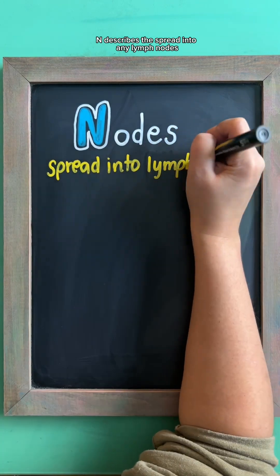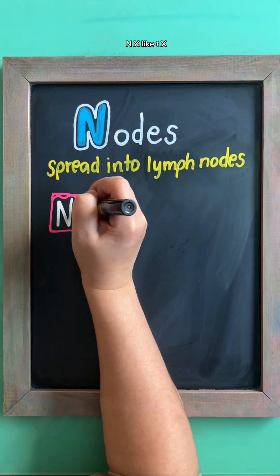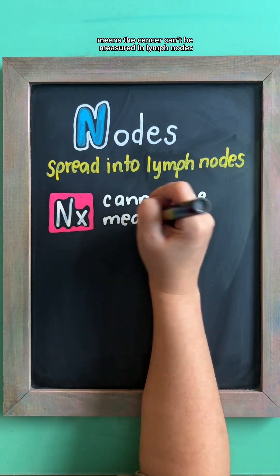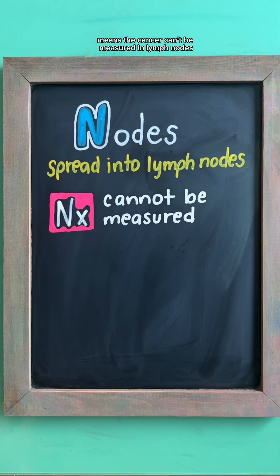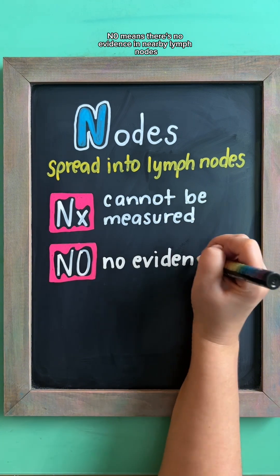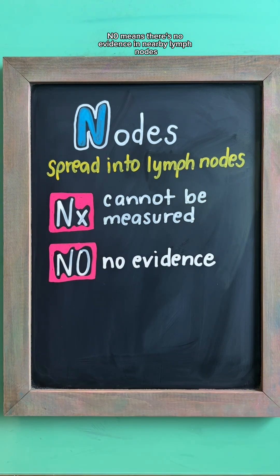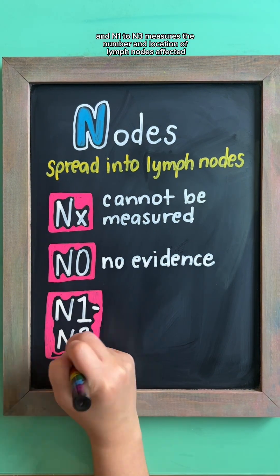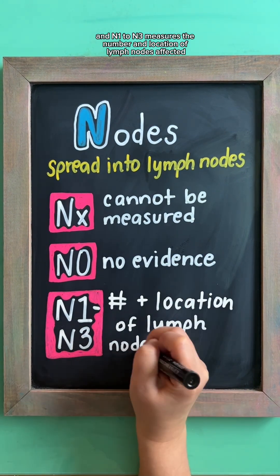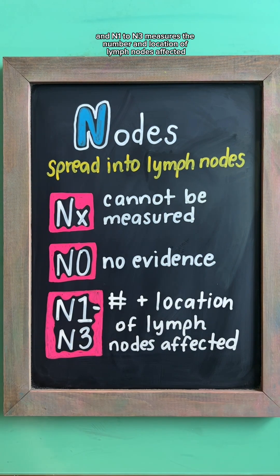N describes the spread into any lymph nodes. NX, like TX, means the cancer can't be measured in lymph nodes. N0 means there's no evidence in nearby lymph nodes. And N1 to N3 measures the number and location of lymph nodes affected.